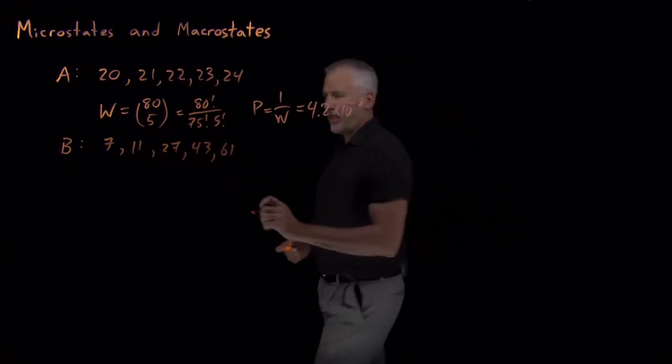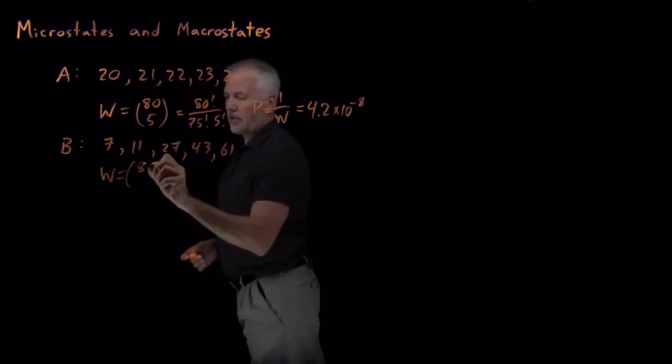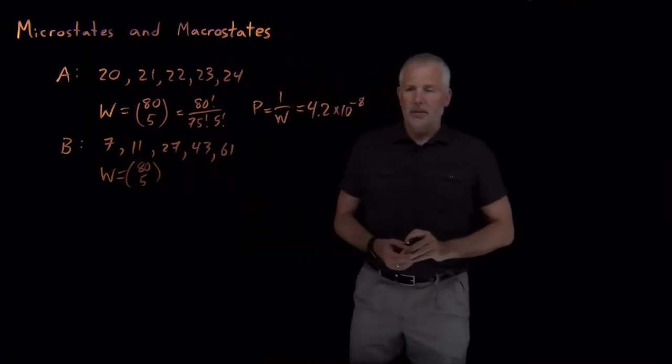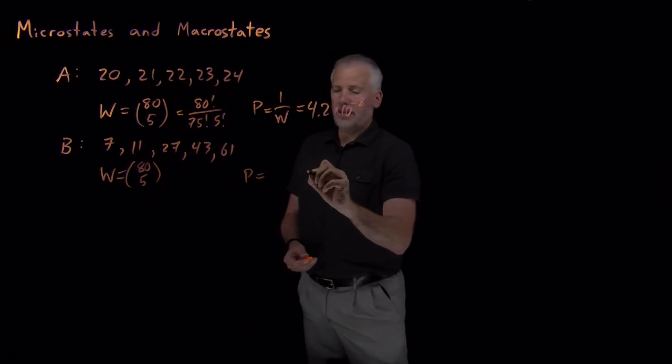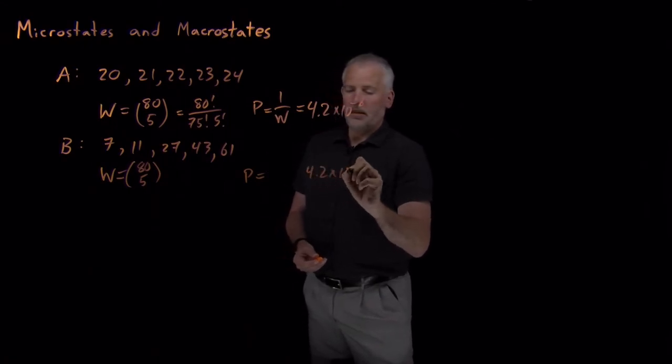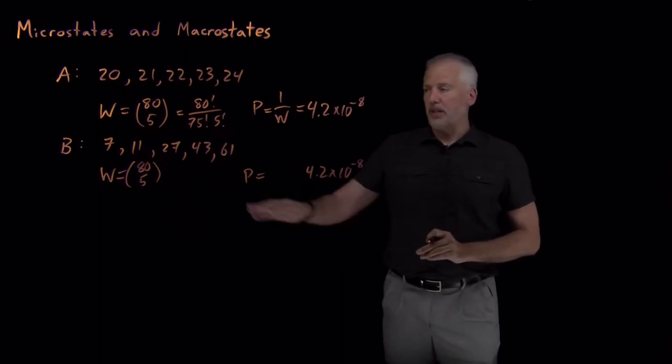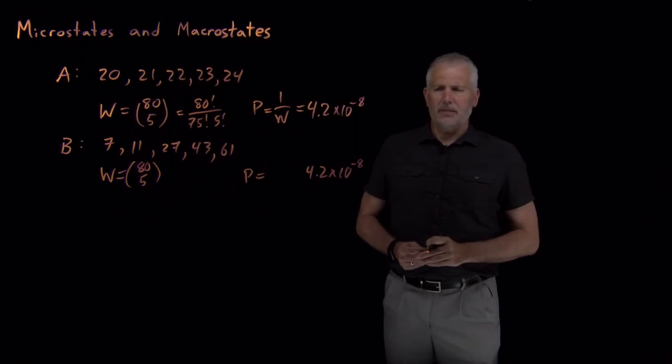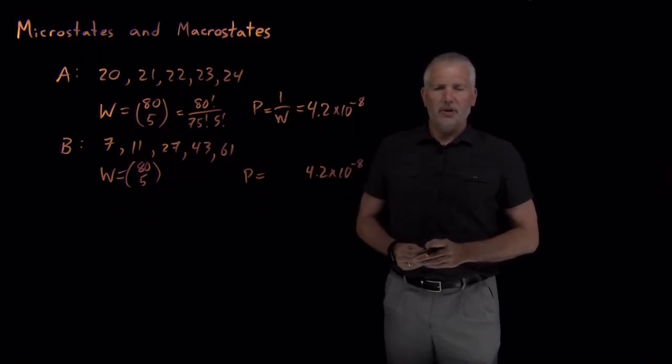And you say, well, I can calculate that too. If you have 80 numbers and you draw five of them, the odds that those particular five numbers came out is 80 choose 5, and the probability is going to be exactly the same thing as it was before. It's only one in 24 million. You can watch the lottery 24 million times, and you'd only see that collection of numbers once. And he says, that doesn't make any sense. The first one is clearly much more rare than the second one. You don't know what you're talking about.